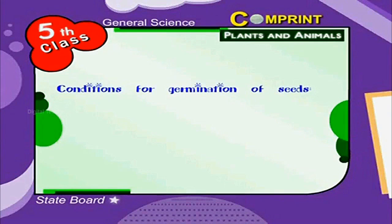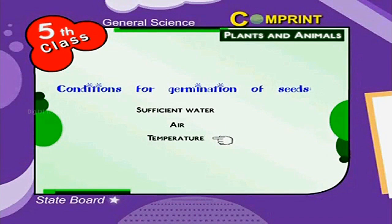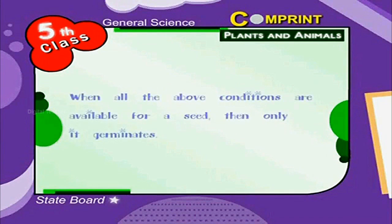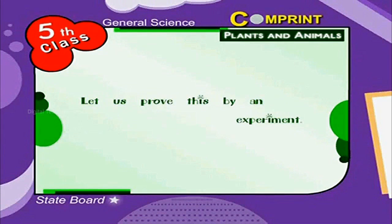Conditions for germination of seeds: sufficient water, air and temperature. When all the above conditions are available for a seed, then only it germinates. Let us prove this by an experiment.